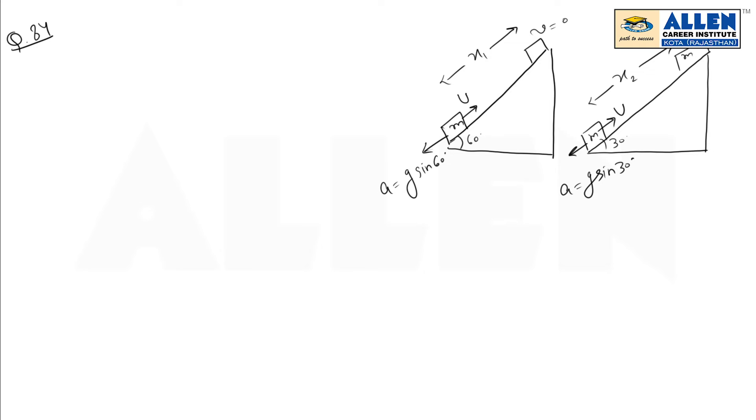Now simplify the first equation. With the help of the first, we can find the value of the second as well. So v² = u² + 2as. Final speed is zero, initial is u. Acceleration is g sin 60. I have a minus sign here because this is the case of retardation.